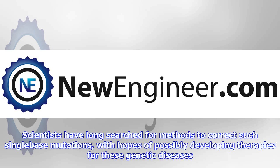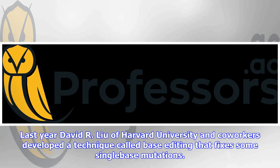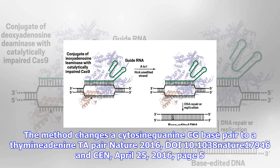The method changes a cytosine-guanine (CG) base pair to a thymine-adenine (TA) pair (Nature 2016, DOI: 10.1038/nature17946; CEN, April 25, 2016, page 5).